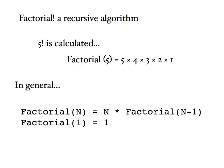Factorial, written with the exclamation mark, can be calculated using a recursive algorithm. Here's a little explanation of how we can do this. So factorial five is defined as five times four times three times two times one. In general, we can define factorial of some number n as being equal to n multiplied by factorial of n minus one.